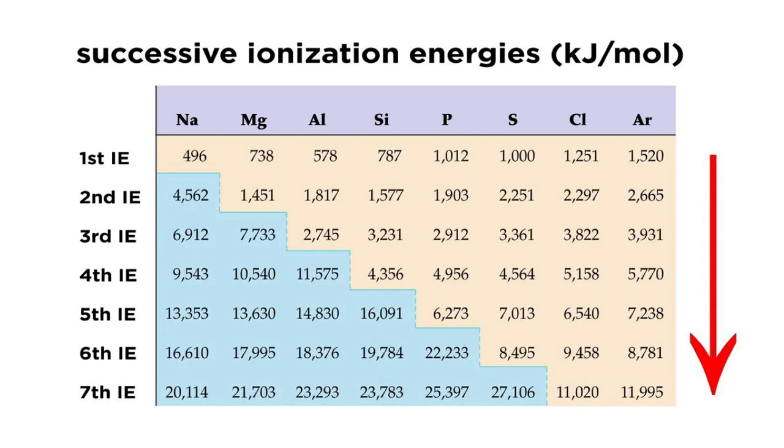If we look across one period, going across period three from sodium to argon, we can look at the values for these ionization energies and notice some really interesting things if we look at the differences between the ionization energies.